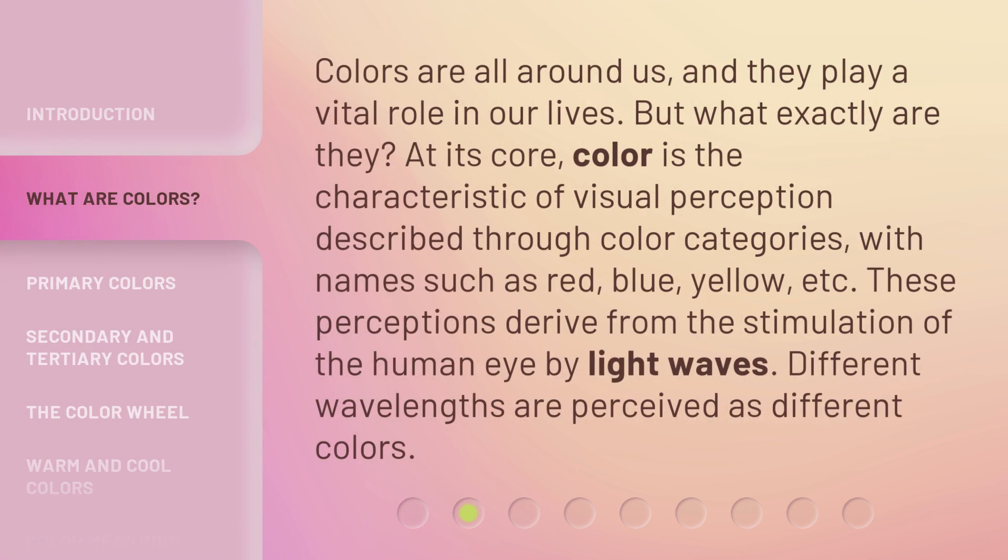Colors are all around us, and they play a vital role in our lives. But what exactly are they? At its core, color is the characteristic of visual perception described through color categories, with names such as red, blue, yellow, etc. These perceptions derive from the stimulation of the human eye by light waves. Different wavelengths are perceived as different colors.